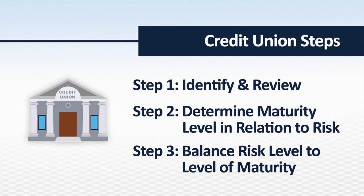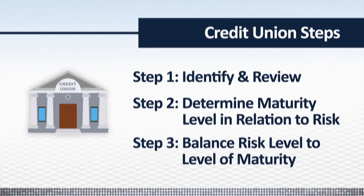A credit union must identify and review its inherent risk profile and maturity levels across the domains. Then management can make a determination as to whether the credit union's maturity levels are appropriate in relation to its risk. Credit union management can then choose to either reduce the level of risk or to increase the levels of maturity, as appropriate.